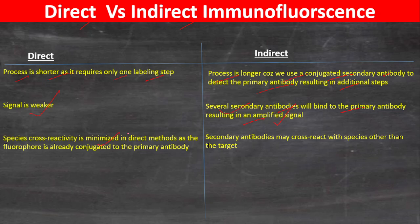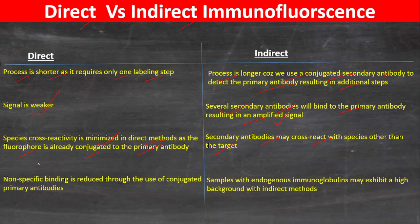Species cross-reactivity is minimized in the direct method because the fluorophore is directly conjugated to the primary antibody. Secondary antibodies may cross-react with species other than the target. Non-specific binding is reduced through the use of conjugated primary antibodies. Samples with endogenous immunoglobulins may exhibit high secondary background with the indirect method.